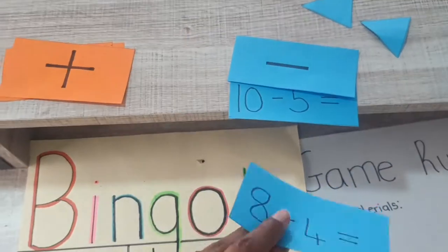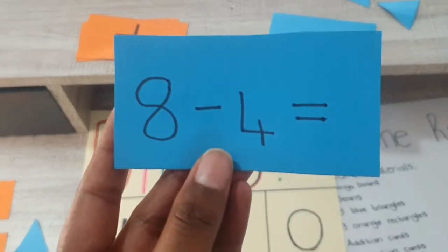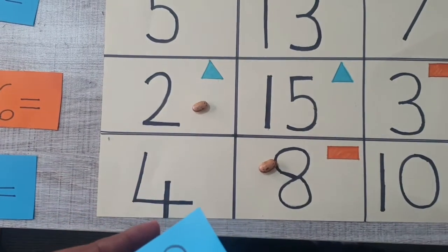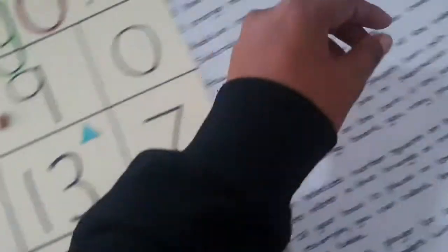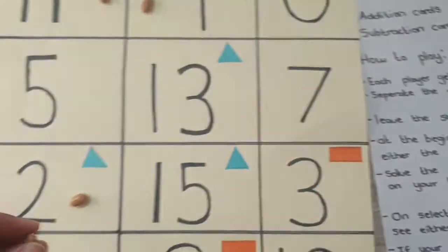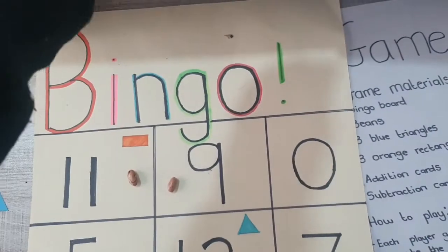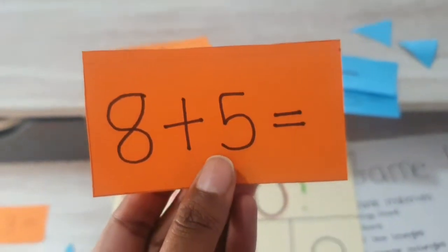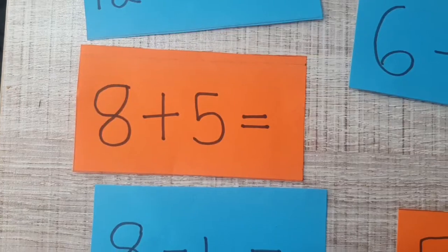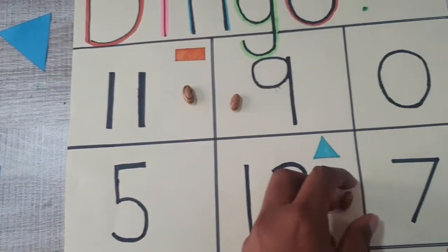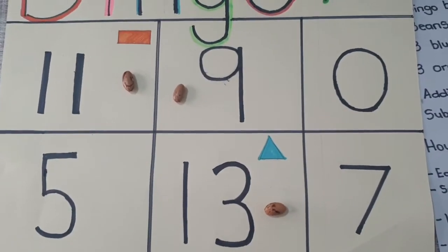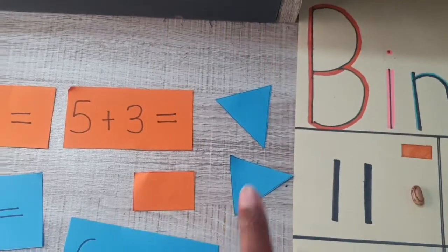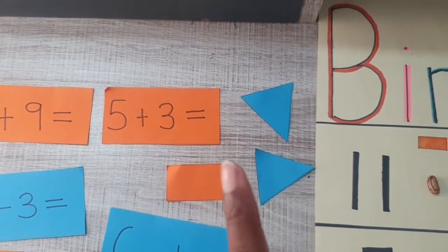Player two's turn: 8 minus 4 is 4. They find 4 on their board but there's no shape on it, so they still place a bean there. My turn: I take from the addition pile — 8 plus 5 is 13. I put my bean on number 13 and collect a triangle. Now I have two triangles and need one more to win.